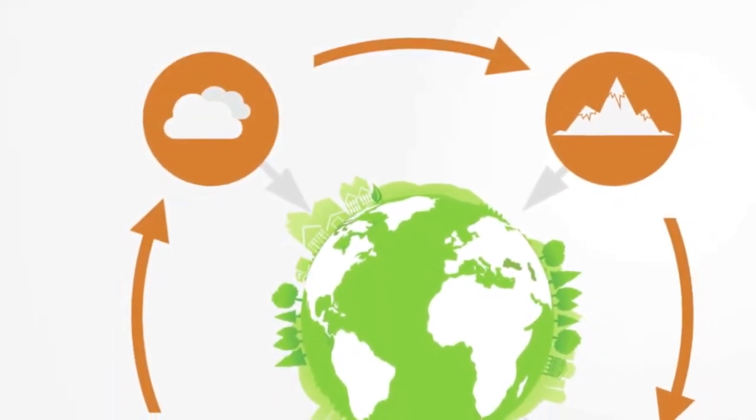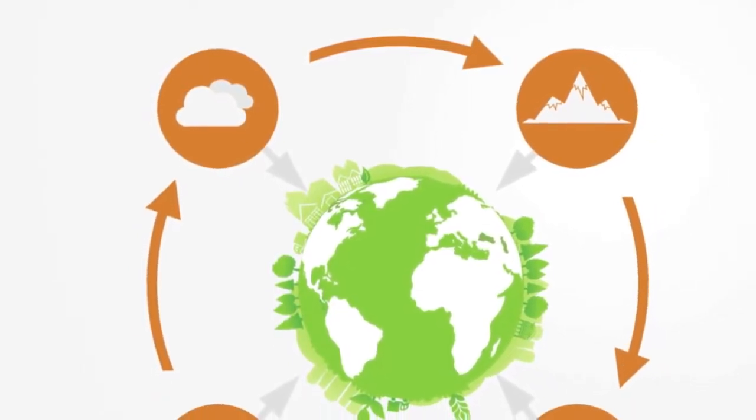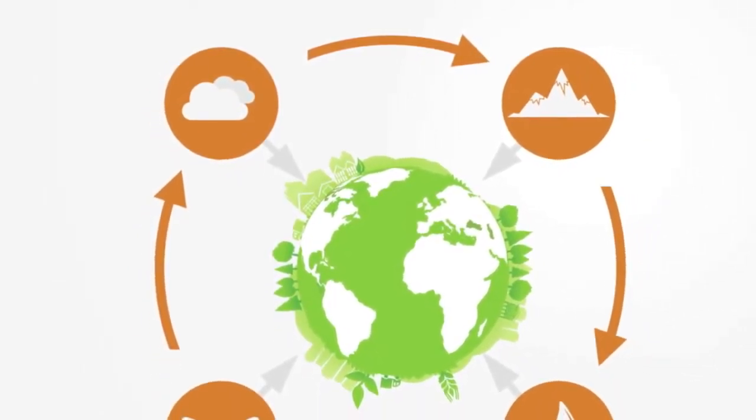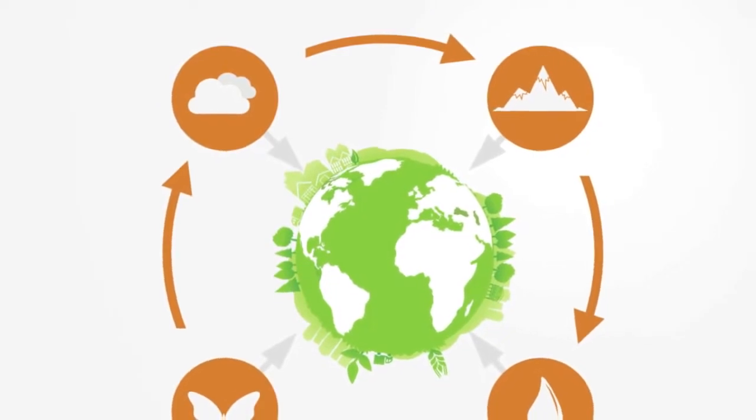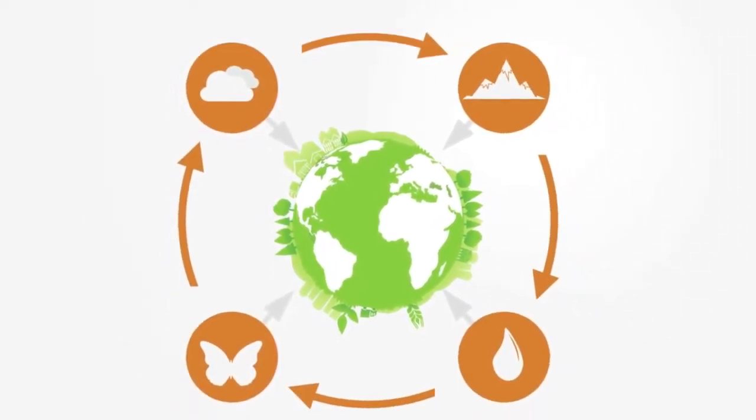Earth System Science is the interdisciplinary study of Earth as a complex system composed of multiple physical and biological processes that interact within cycles or spheres to give rise to the overall state of Earth as an entire system.